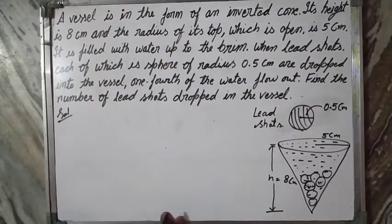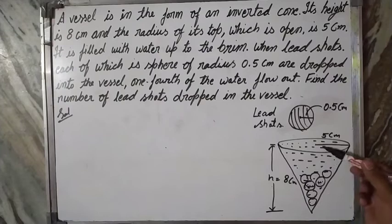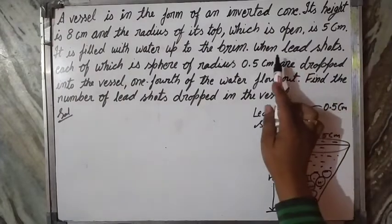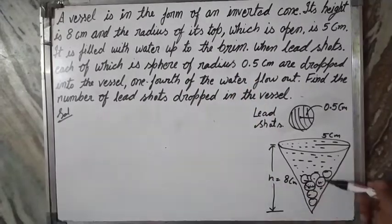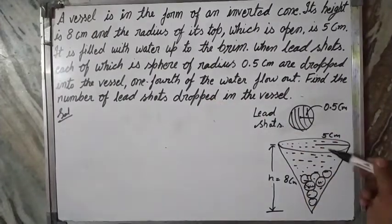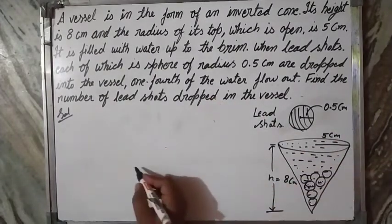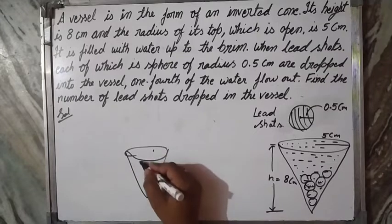Here is a vessel which is shaped like an inverted cone and it is full of water. The lead shots, which are sphere-shaped with radius 0.5 cm, if we insert them, one-fourth of the water flows out.